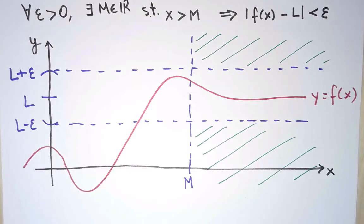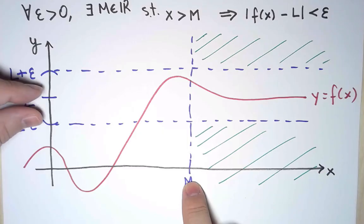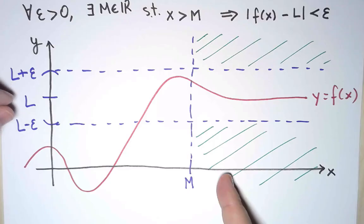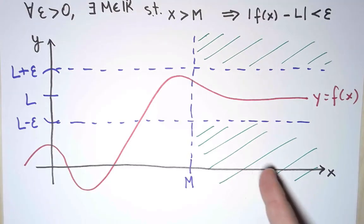And that value of M may depend on ε. So if I choose one value of ε, I find one value of M. If I make ε smaller and make this window narrower, I may have to take a value of M bigger. If I make ε even smaller, I will find yet another value of M probably bigger.